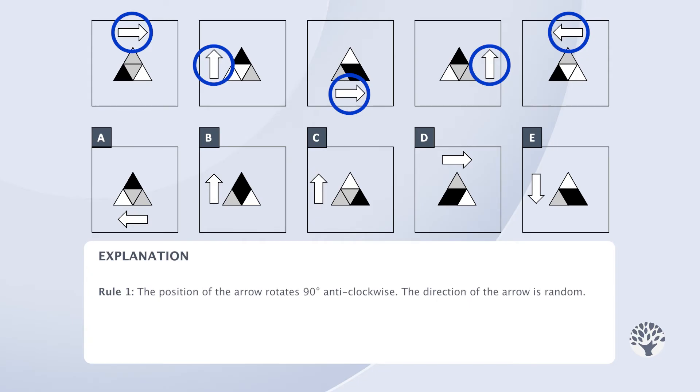just like the arrow in the second frame. We can see that the arrow in answer options A and D is not in the right position, so we can eliminate them.